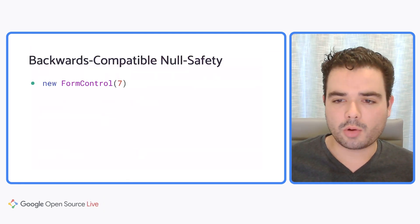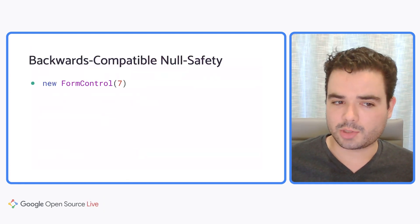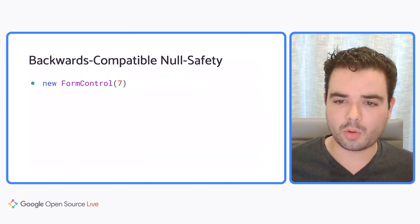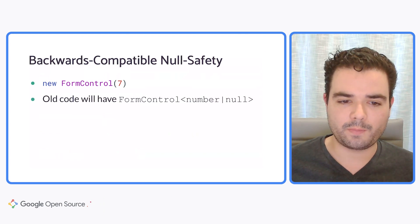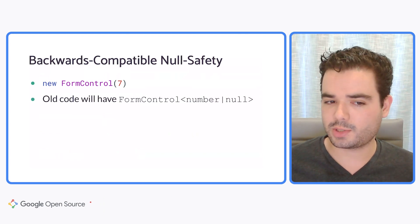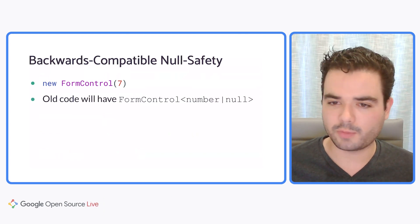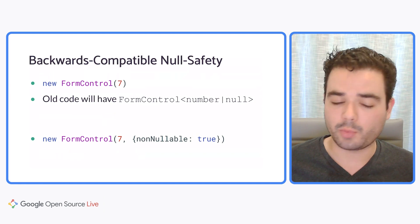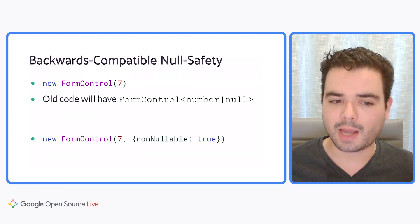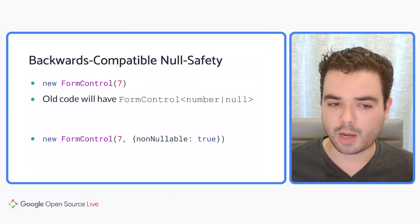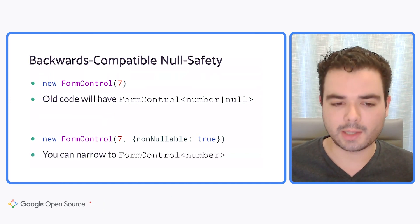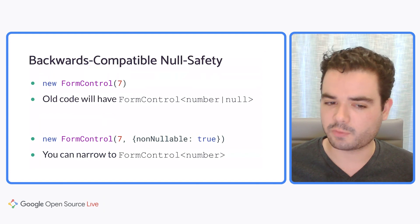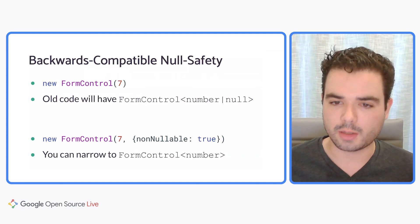Old code will have a constructor like new FormControl with just a value, which infers as FormControl of number or null. But with new code, you can add the non-nullable option, and that will cause this to be inferred simply as FormControl of number.